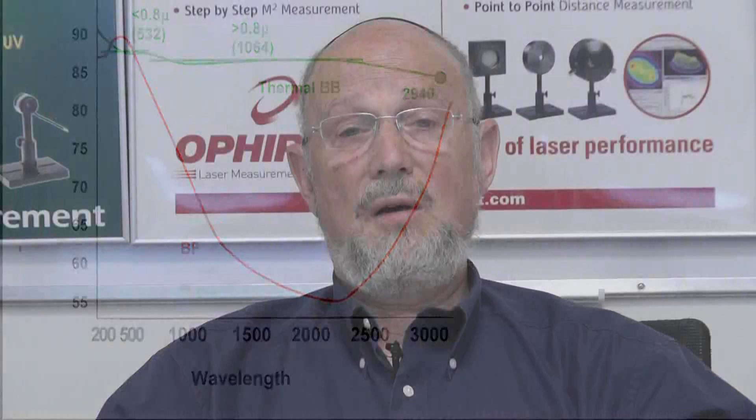So this sums up all the sources that we know of for error for our meters. Ophir tries to be very careful to define exactly all sources of error so the user can be confident when he uses our products.